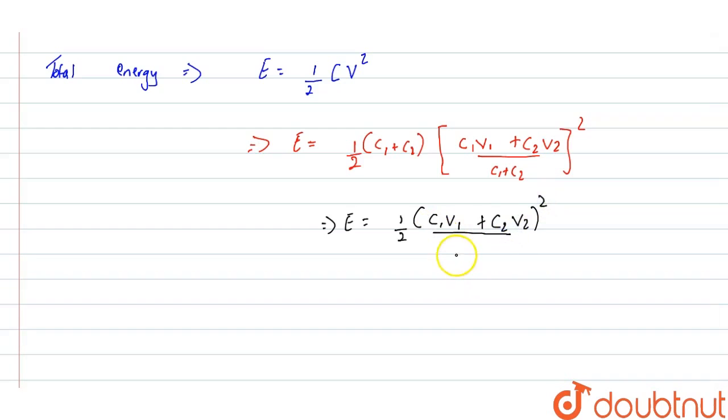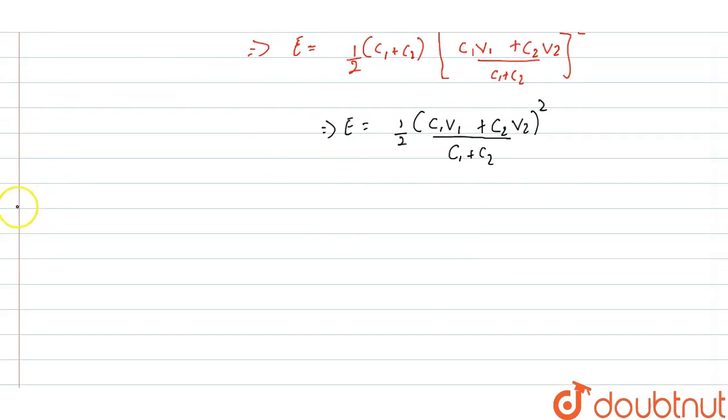Now, for the next part of our question, part C: The difference in energy is due to the loss of energy, which is due to the movement of charge during the sharing of charge. When the sharing of charge occurs, there is loss due to this movement of charge. Whenever there is movement of charge, energy will always be lost.